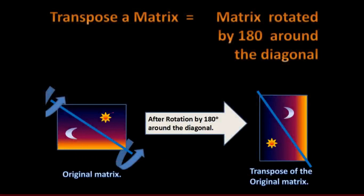You can visualize the transpose along the diagonal — it is like rotating the matrix 180 degrees diagonally. This is used in image processing and computer programs as a technical technique.